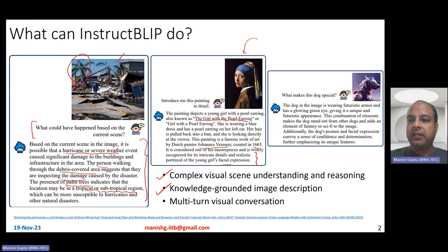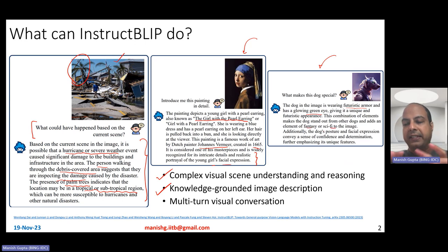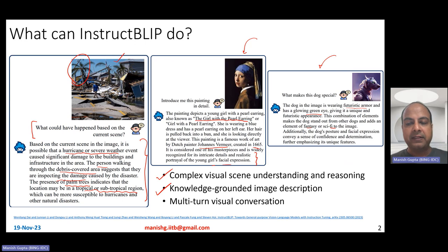Also look at this example: 'What makes this dog special?' Essentially, it's a futuristic dog with some futuristic armor and glowing green eyes — fantasy, sci-fi — and a detailed description of what you see in the image, focusing on the minor details as well, and therefore coming up with a very contextually sensitive, correct answer.